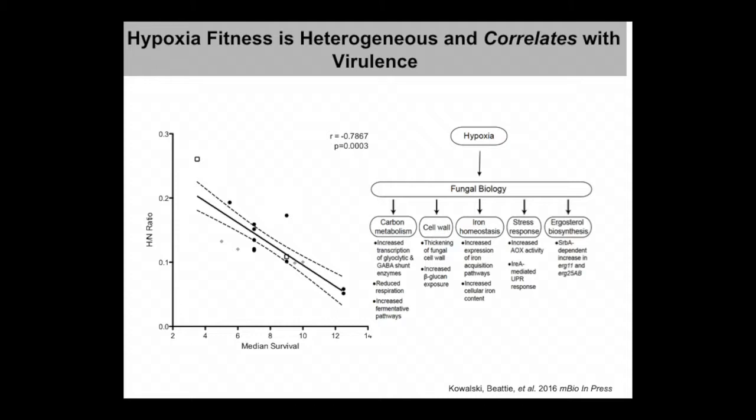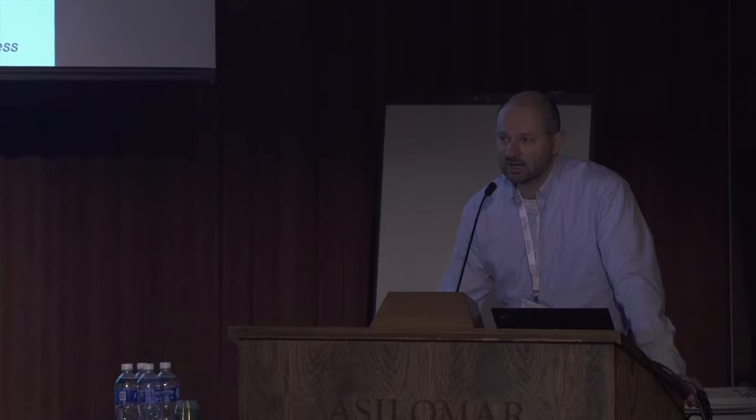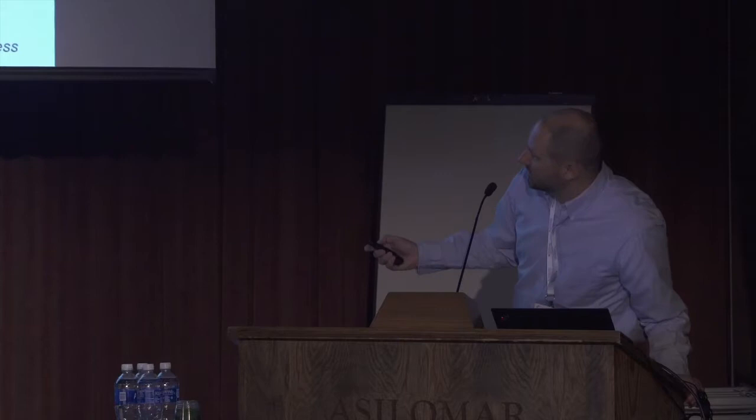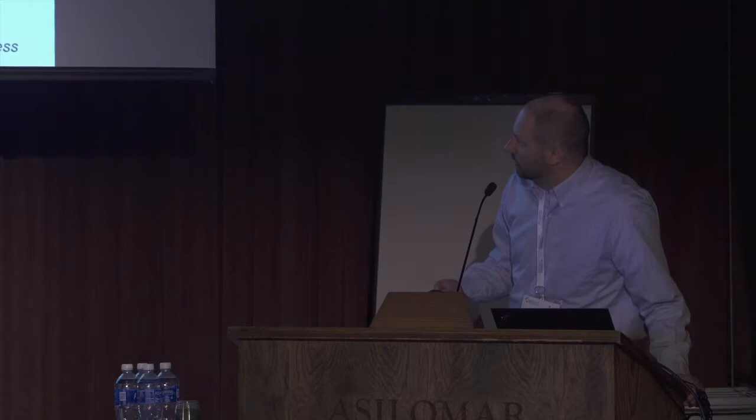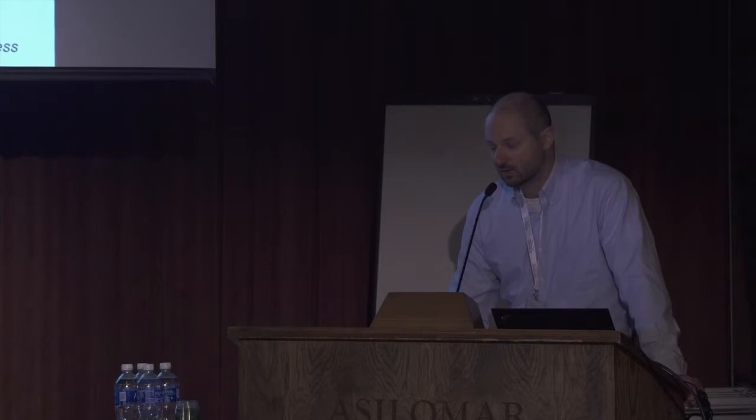We're continuing to explore the mechanisms here. When we sent the paper in for review we got pushback — understandably, since we're arguably making the first correlation between a phenotype and heterogeneity within this important pathogen. The point I want to make is that hypoxia has a huge impact — as seen in the transcriptomics data — touching many virulence pathways: it dramatically changes carbon metabolism, alters and completely remodels the cell wall, alters iron homeostasis, changes the stress response, alters the unfolded protein response, and impacts drug efficacy by altering sterol biosynthesis. So perhaps it's not surprising that you would see a correlation with virulence.